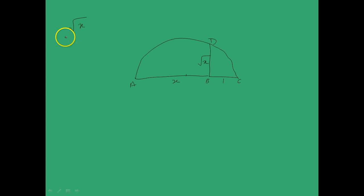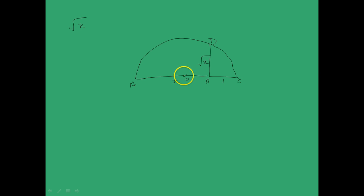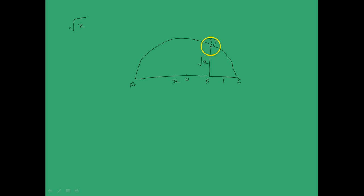Next we will look at the construction of a length equal to root x. This construction starts by drawing a line segment of length x, that is AB, then extending B by 1 unit to C. Find the midpoint O of AC, and with OA or OC as radius, draw a semicircle. Extend B upwards to intersect the semicircle at D — the length BD equals root x.